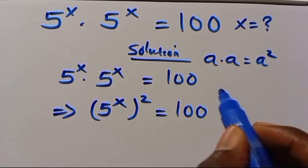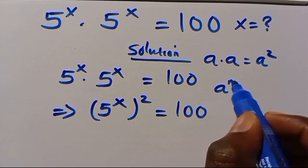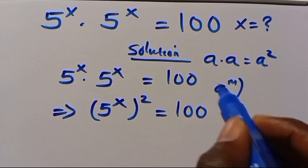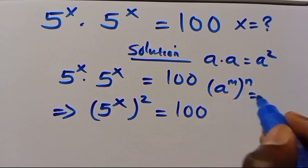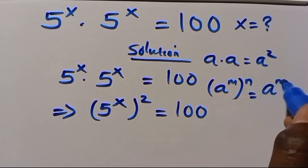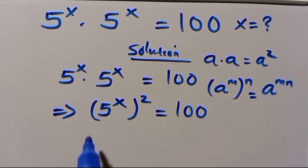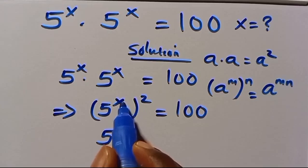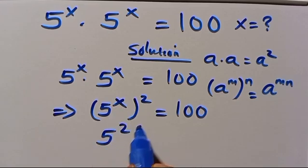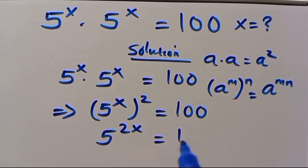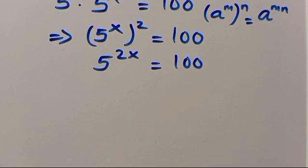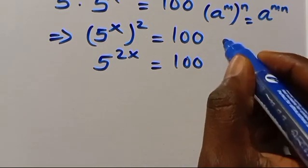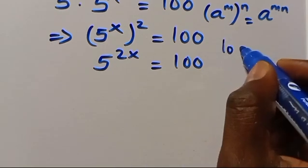Recall that when we have a to the power of m, in parentheses, to the power of n, this always equals a to the power of m times n. So from here we have 5 to the power of x times 2, which is 2x, equals 100.